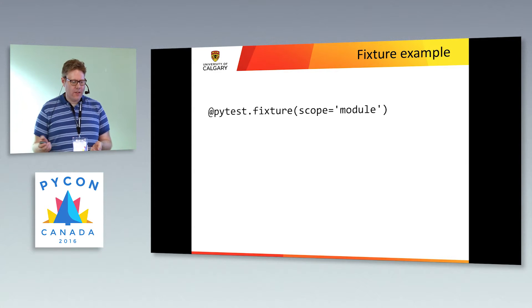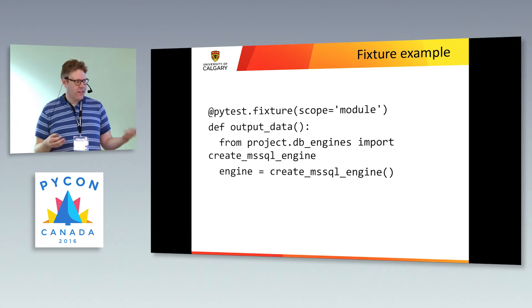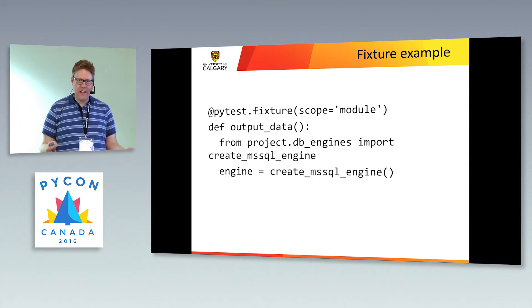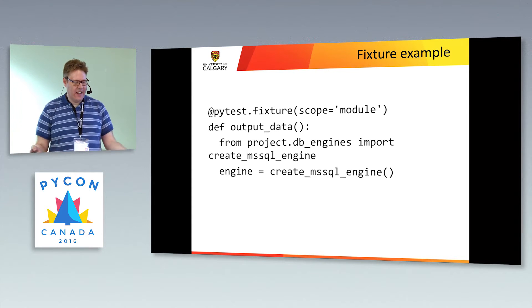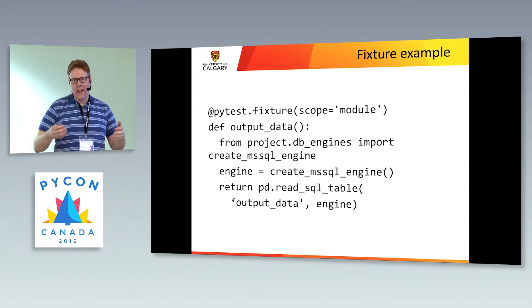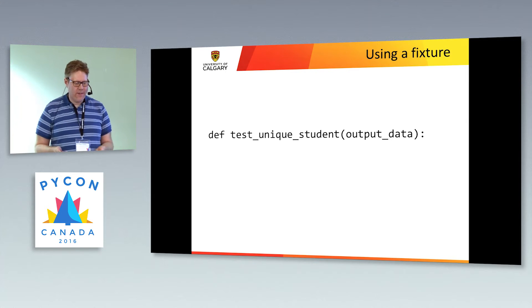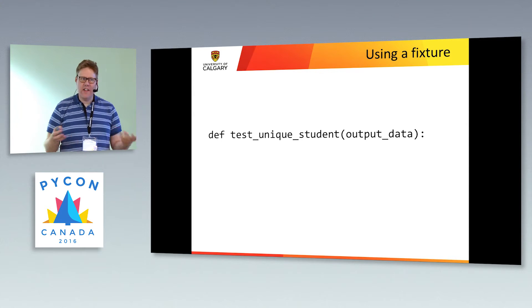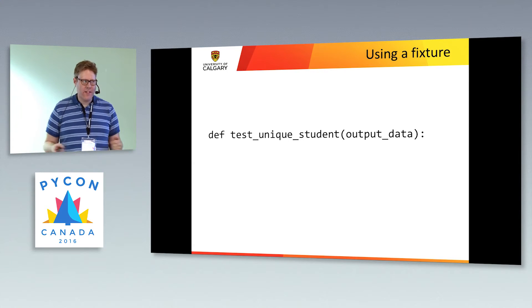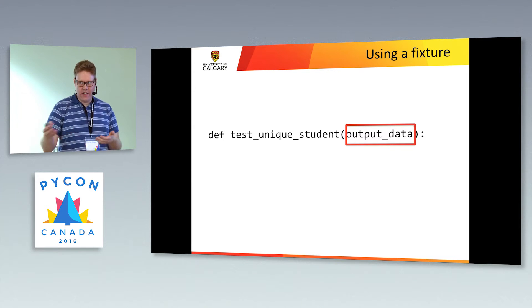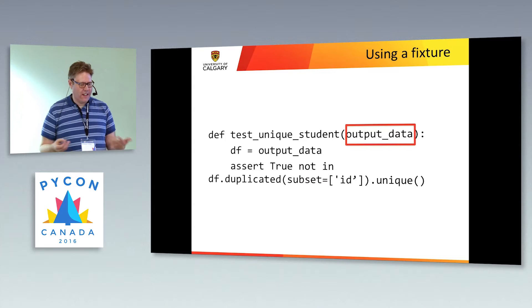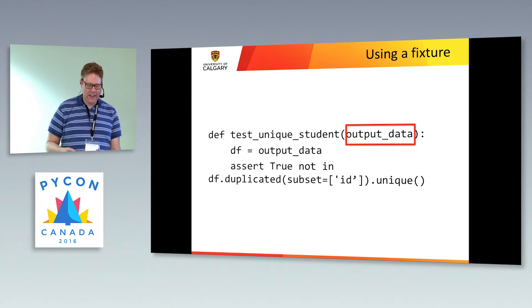As a quick example: you apply the fixture decorator and write a function — say, one that pulls the data my process has generated out of the database. I use SQLAlchemy, create an engine, initiate it, and then just read the output table. I only have to do that once, and then it's available for all the tests in my test module. So if I want to use it — for example, I work with a lot of student data — one thing I want to check is that the table I've generated has only one record per individual student. So I test whether it's unique, and you can see in the code whether the data is duplicated or not.